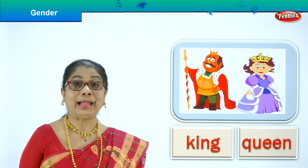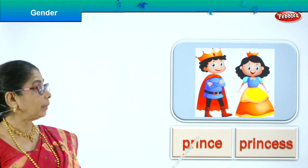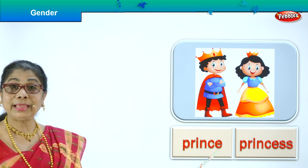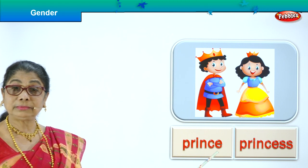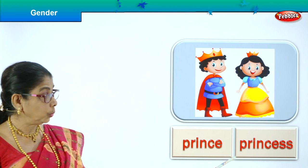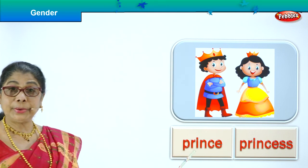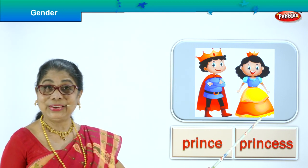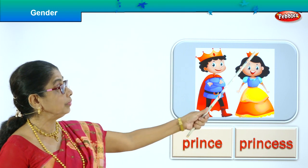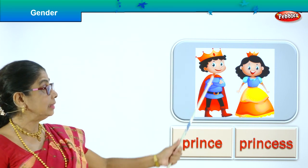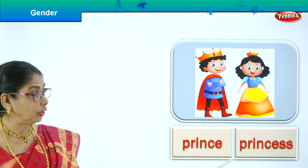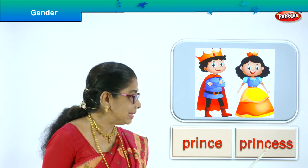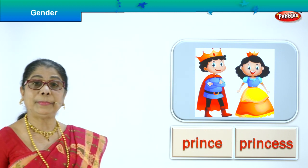Let's look at another picture. Who is this? Prince. The king's son is called a prince, and the king's daughter we call her princess. Prince, princess. See how cute they look? They both have crowns on their heads. This is a little prince — see how cute he looks. Princess — look at the beautiful dress with the crown on her head.